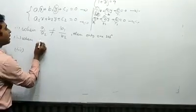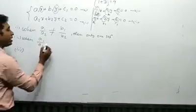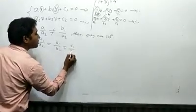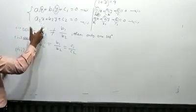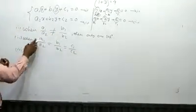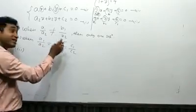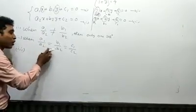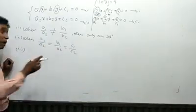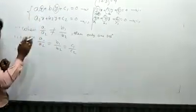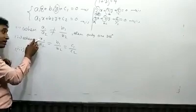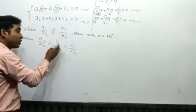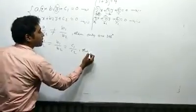The second condition: when a₁/a₂ equals b₁/b₂ equals c₁/c₂ — all three ratios (x-coefficient, y-coefficient, and constant term) are equal to each other.